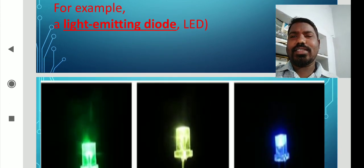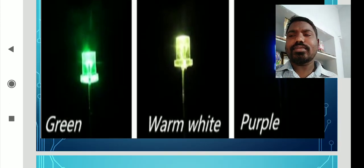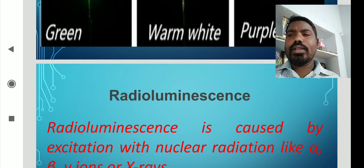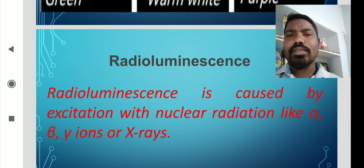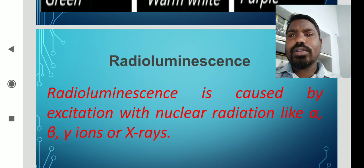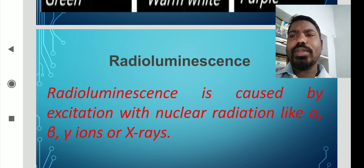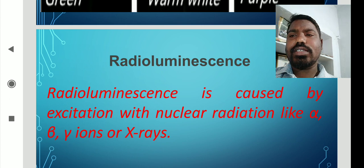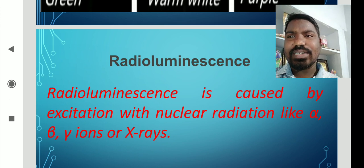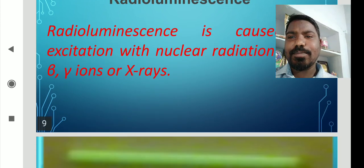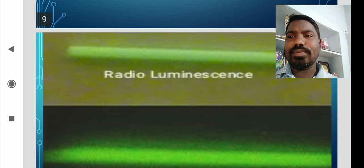This is an LED figure showing green, warm, and purple light. Radioluminescence is caused by excitation with nuclear radiation such as alpha, beta, gamma, or X-rays. A luminescence that is formed because of these radiations is called radioluminescence. As seen in the figure, you can also see the emission pattern.